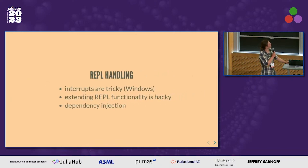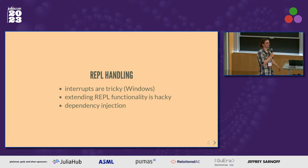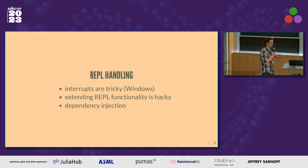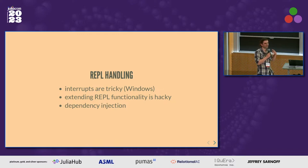A few ugly points — and when we think about ugly, we usually think about code. There's some ugly code in our REPL handling. We have issues with integrating interrupts into the extension. That's not just due to Windows not having signal handling — it's also because it's a bit unclear how to interrupt Julia code properly from another process without killing our own functionality in the process. Extending REPL functionality is a bit hacky. There are some hooks you can use, but in general it doesn't feel great. There's no API for the REPL — we are mucking around in Julia internals here.